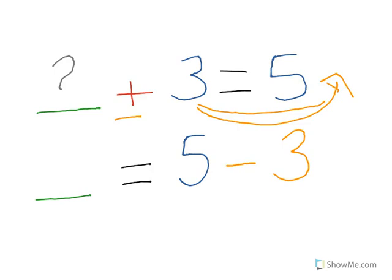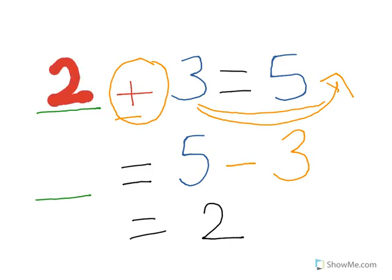it changes sign. Right now it's plus, you make it minus. So minus 3, which equals 5 minus 3 is 2. The answer is 2, because you can replace the question mark with 2. So 2 plus 3 equals 5, that's the answer.